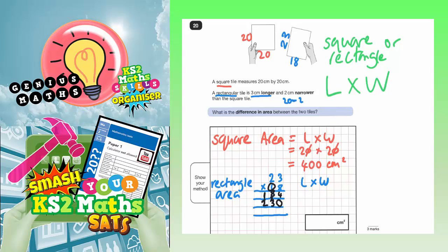Our final answer, we need to add these together. So nothing add 4 is 4. 3 add 8 is 11, put the 1 in, carry the 1. And 1 plus 2 plus 1 is 4. So that's 414 centimetres squared.